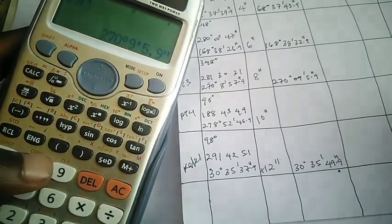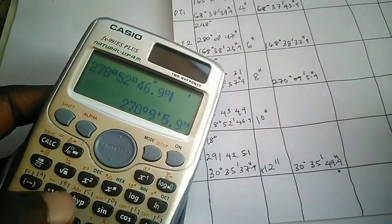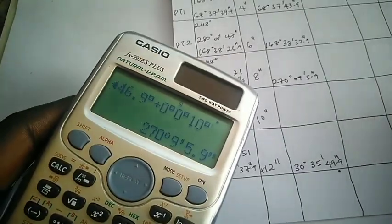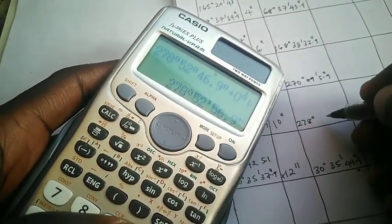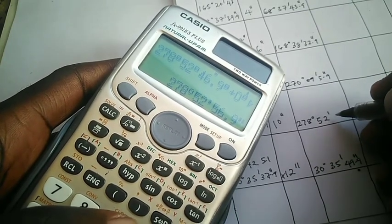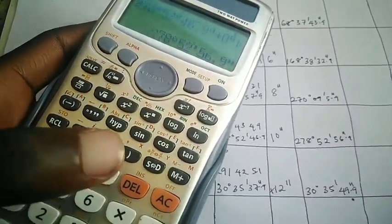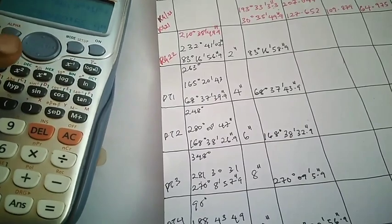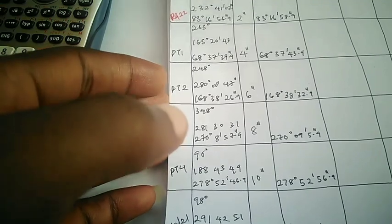Then the last one here, we have 278 degrees 52 minutes 46.9 seconds plus 10 seconds, which gives us 278 degrees 52 minutes 56.9 seconds. This is practically everything you need to do about how to apply the correction to your forward bearing to get your corrected bearing. These are the values of our corrected bearing.